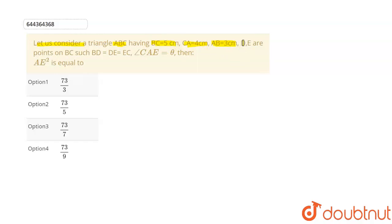D, E are points on BC such that BD equal to DE equal to EC and angle CAE is equal to theta, then AE square is equal to?